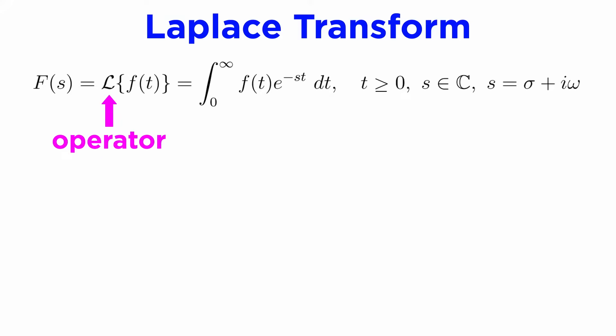The Laplace transform is an operator that takes some function, say f of t, and returns another function of a different variable, traditionally written capital F of s, where s is a new variable that is generally a complex number and can be written as s equals sigma plus i omega. This operator is defined as the improper integral from zero to infinity of f of t times e to the negative st dt.